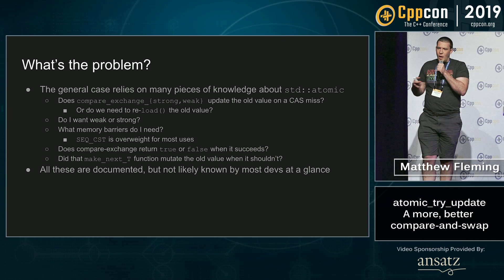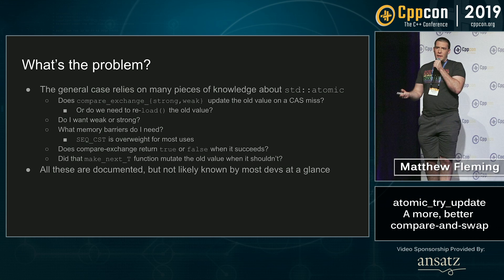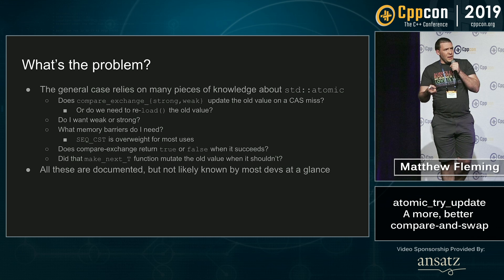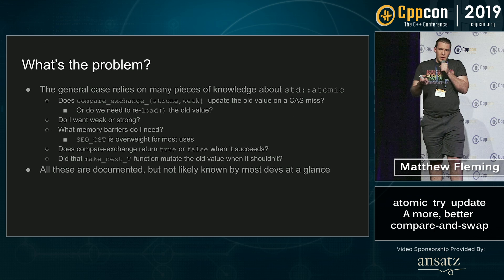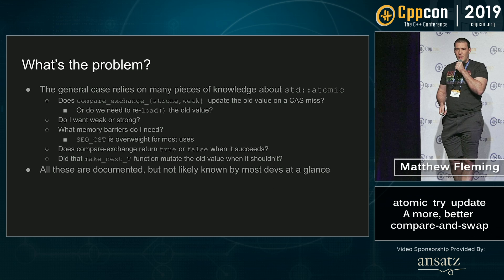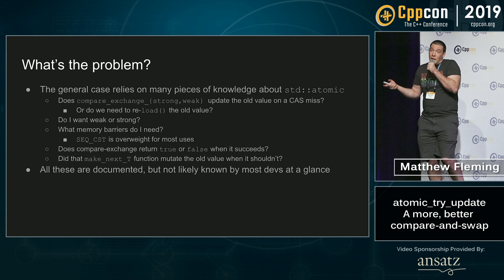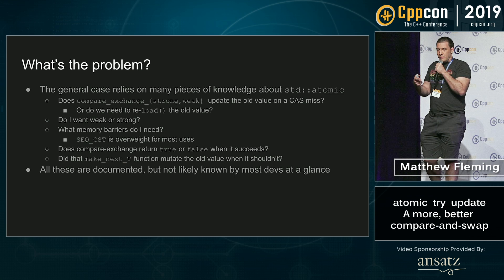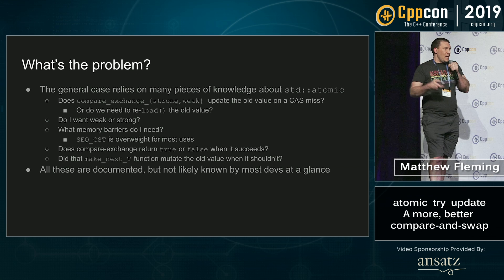Does compare_exchange_strong or weak update the old value on a compare-and-swap miss, or do I have to reload the old value? I know the answer. The manual has the answer. Do you know the answer? Do I want weak or strong semantics on this compare_exchange? What's the difference? What kind of memory barriers do I need? Was the default sequentially consistent? Is that overweight for my use case? Probably, but that's the default. Does compare_exchange return true or false when it succeeds? I think I know, but maybe I'm wrong. And did that function I called to make the next T mutate the old value even though it shouldn't? All of these are things you should know, but maybe don't want to have to think about.